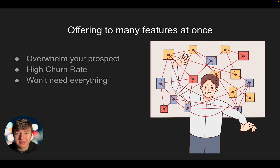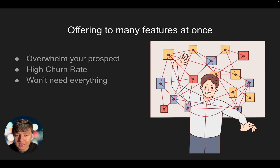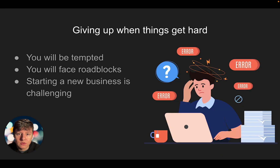If someone doesn't know how to use your software and feels overwhelmed, they're going to cancel. Also, the business owner might not need everything — don't offer features they don't need. In the future, once your client understands the software, you can upsell them on other features. But at the beginning, keep it simple: offer a website, reviews, a chat widget — one to three things that complement each other. The confused mind doesn't buy.